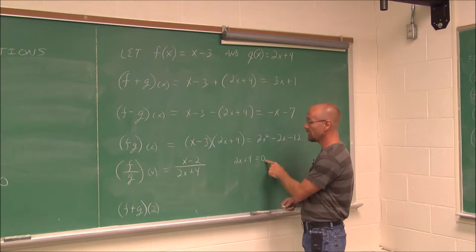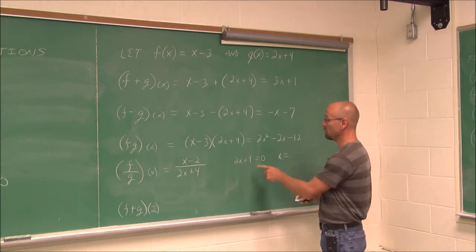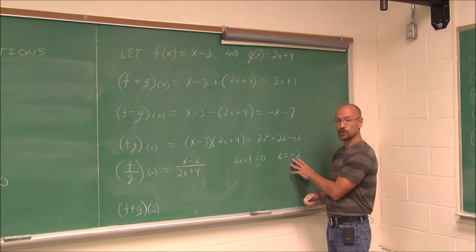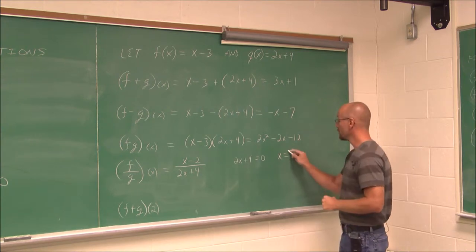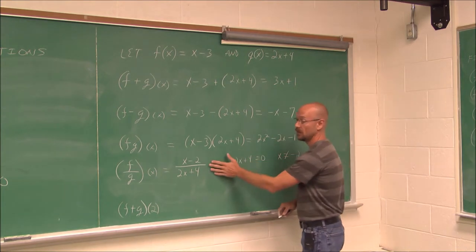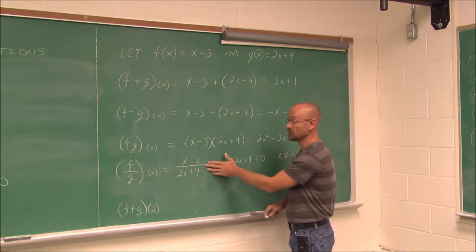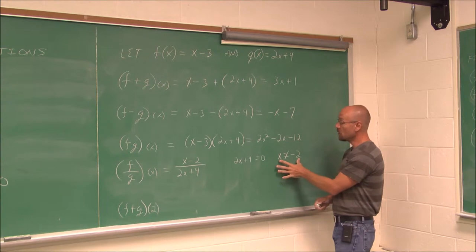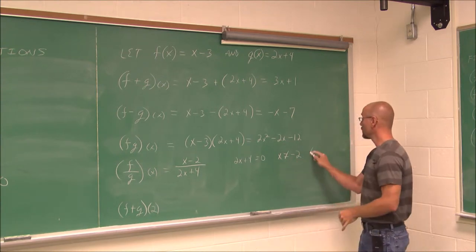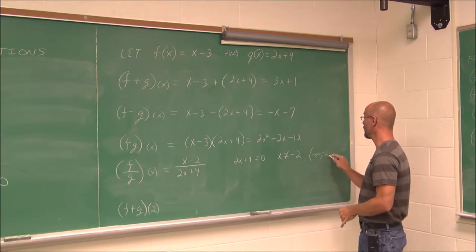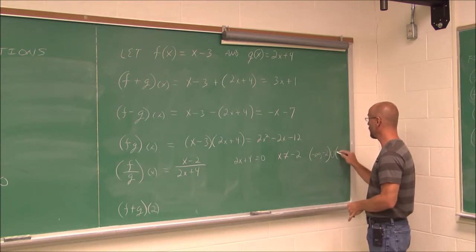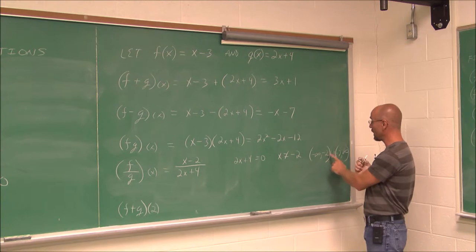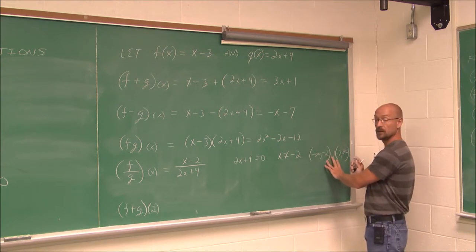So I can say this quotient can have any value of x as long as x is not negative 2. You might be asked to write it in interval notation: from negative infinity to negative 2, not including negative 2, union negative 2 to positive infinity. The only value restricted is negative 2.